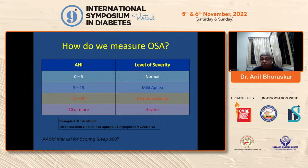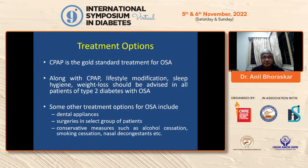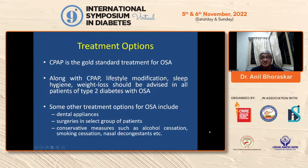This home testing can be done at home. If you have severe apnea, then you need polysomnography with EEG and 12-lead EEG, which is an elaborate test that will tell you exactly where the problem is. Treatment options: CPAP is the gold standard treatment. Along with CPAP, lifestyle modification, sleep hygiene, and weight loss should be advised for patients with type 2 diabetes and OSA.